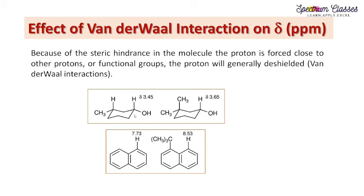The next factor is van der Waals interaction. Due to steric hindrance in the molecule, the proton is forced close to another group. Comparing two example molecules with the same groups: the delta value for one proton is 3.45 ppm, however the delta value for the proton in the other molecule is 3.65 ppm — downfield shifted because of the presence of a neighboring CH3 group. Due to steric hindrance, this proton interacts with the electronic cloud of the CH3 group and feels deshielded due to the van der Waals interaction.